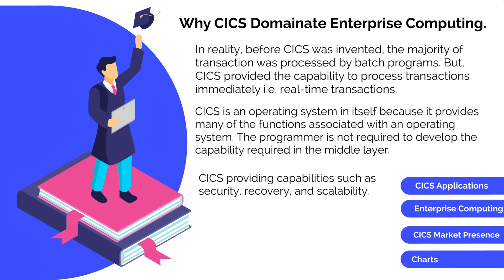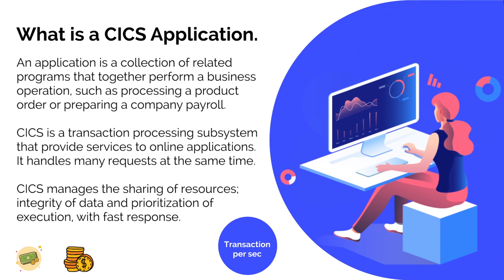Now let's look at an overview of CICS applications — what is the market share today and what are the different industries in which CICS is being used. In layman's terms, a CICS application is a collection of related programs that work together to perform a business operation or a specific task — for example, processing an order placed online or initiating a fund transfer in a banking application. CICS is a transaction processing subsystem that provides services to online applications and can handle multiple requests at the same time. CICS also acts like an operating system in that it manages the sharing of resources, integrity of data and prioritization of execution with fast response.